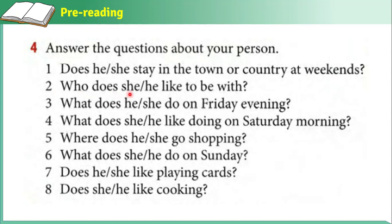Number two: who does she or he like to be with? Number three: what does he or she do on Friday evening? Number four: what does she or he like doing on Saturday morning? Number five: where does he or she go shopping? Number six: what does she or he do on Sunday? Number seven: does he or she like playing cards? Number eight: does she or he like cooking?